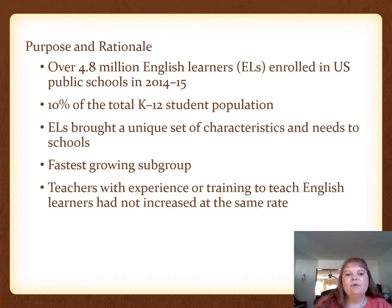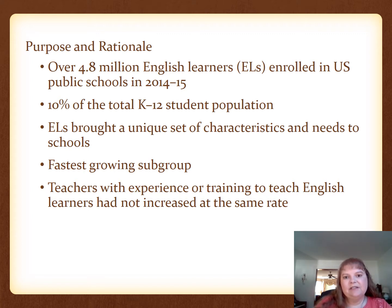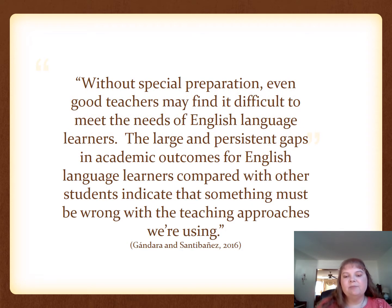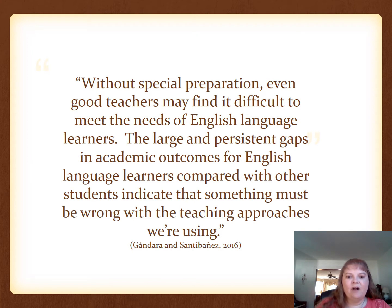Over 4.8 million English learners were enrolled in U.S. public schools in 2014–15. English learners are one of the fastest growing subgroups of students across the United States, even in rural districts that have not previously had English learners. This means that more and more mainstream classroom teachers have English learners in their classrooms. While there had been an increase in the number of English learners in schools, the number of teachers with experience or training to teach English learners had not increased at the same rate. All children in the United States are entitled to equal access to a public elementary and secondary education, regardless of their parents' actual or perceived national origin, citizenship, or immigration status. Without special preparation, even good teachers may find it difficult to meet the needs of English language learners, and the large and persistent gaps in academic outcomes for ELLs indicate that something must be wrong with the teaching approaches we're using.